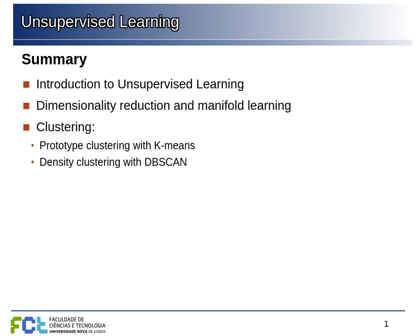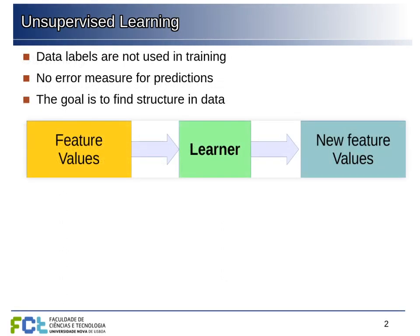We're going to look at two different clustering algorithms: prototype-based clustering with k-means and density-based clustering with DBSCAN. The idea of unsupervised learning is a broad category where we put everything we do when we are not considering labeled data — we are not considering target values that we want to approach. Our goal is to help us understand the data, find some structure in it, and generate new features — creating a different representation of the data.